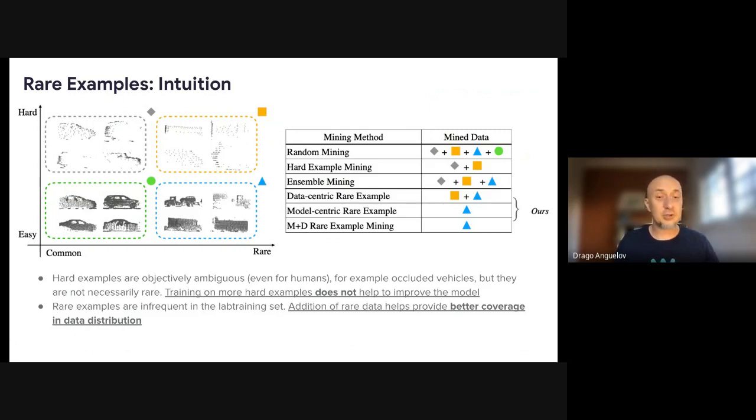But occluded objects are actually very common. They're not necessarily rare. Training on more hard examples like that does not help improve the model. We've already seen a lot. And rare examples seem infrequent in the training set. Addition of rare data like this one can provide better coverage in the data distribution. We want these examples. And so how do we get these examples? I will show you next two different definitions of finding rare.